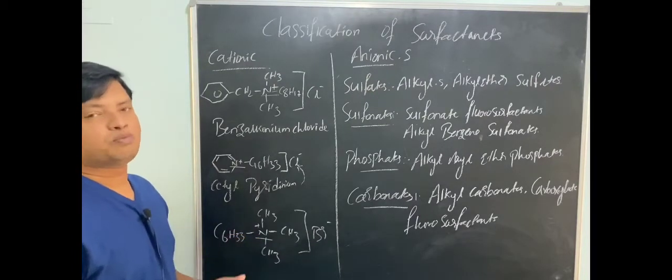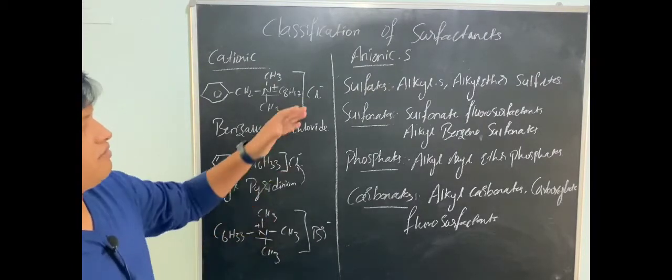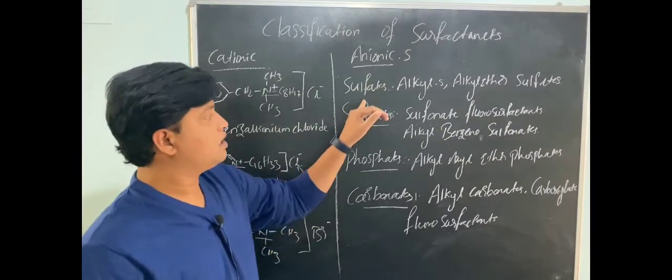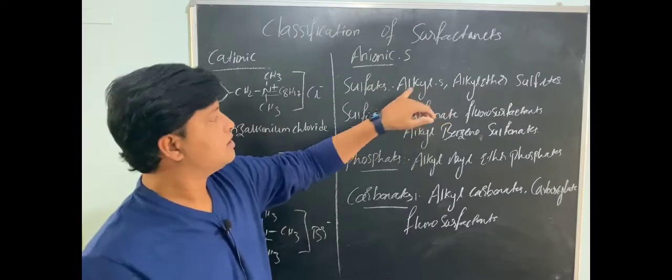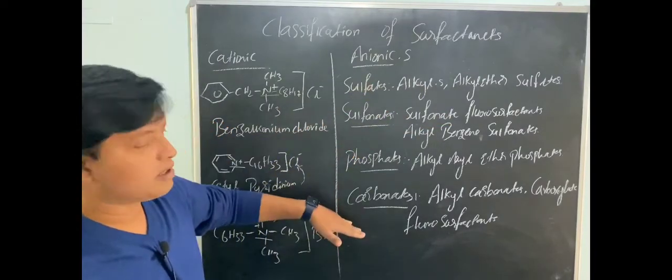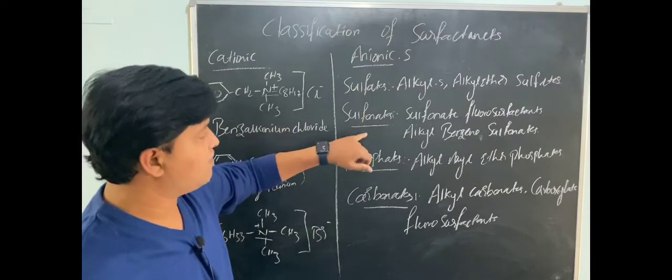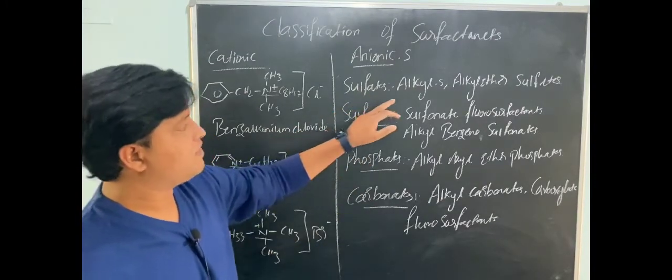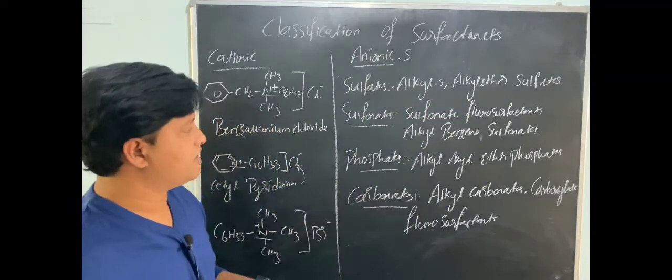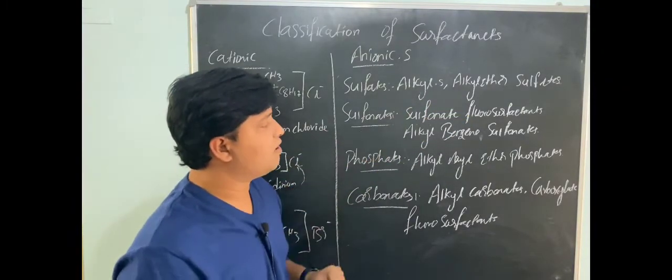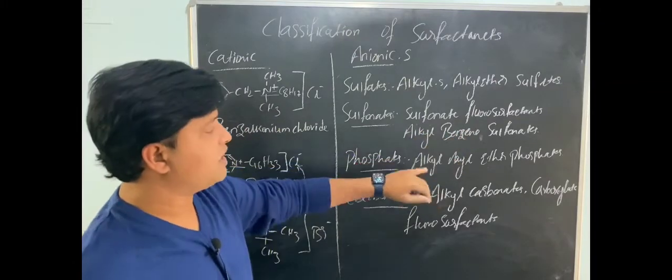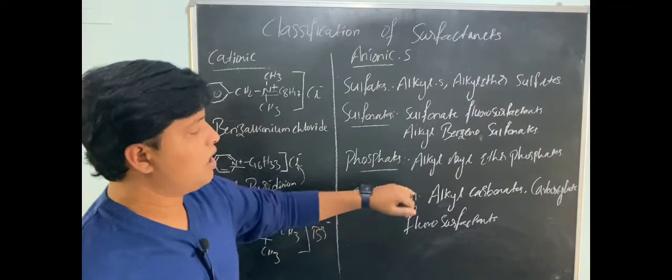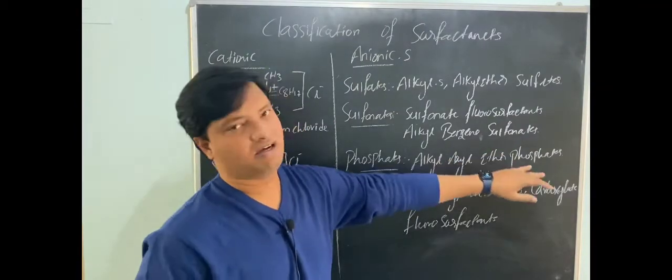Then we have anionic surfactants. There are different types of anionic surfactants: sulfates, sulfonates, phosphates, and carbonates. In sulfates we have alkyl sulfates and alkyl ether sulfates. In sulfonates we have sulfonate fluorosulfonates and alkyl benzene sulfonates. In phosphates we have alkyl aryl ether phosphate sulfate. Last one is carbonates - we have alkyl carbonates or carboxylate fluorosurfactants.